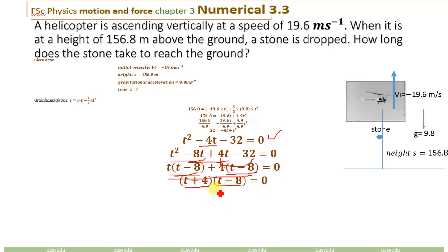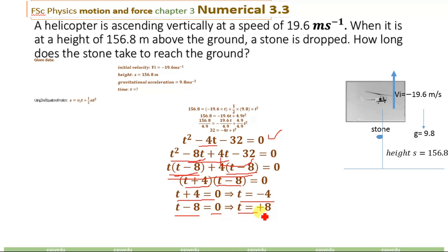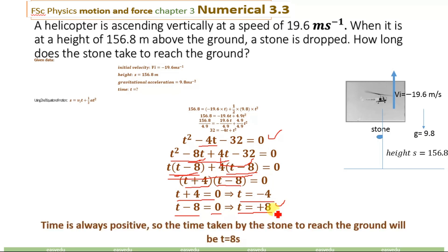Solving this equation for the value of t: from (t + 4) = 0 we get t = minus 4 seconds, and from (t minus 8) = 0 we get t = plus 8 seconds. Between these two values — minus 4 and plus 8 — we must choose wisely, because time can never be negative; time is always taken as positive. So we take the positive value of time, which is plus 8 seconds. The time taken by the stone to reach the ground when dropped from the helicopter is 8 seconds. This is the answer.